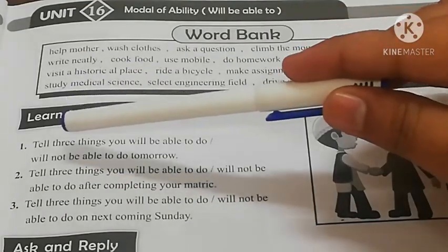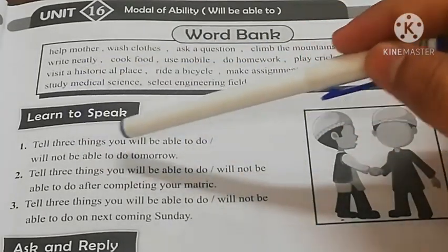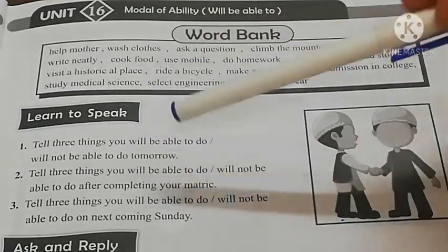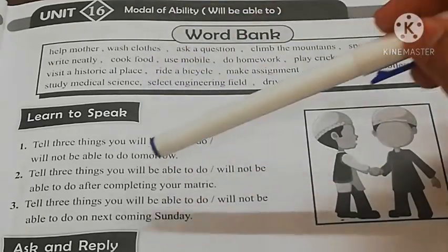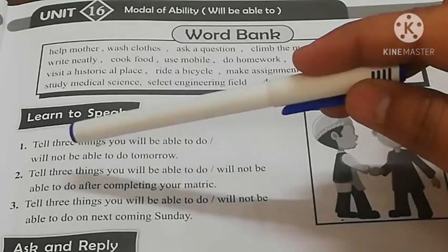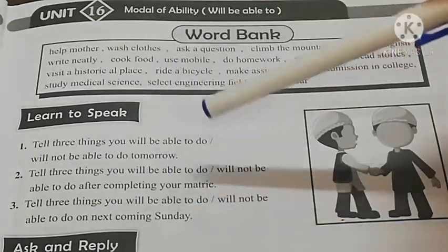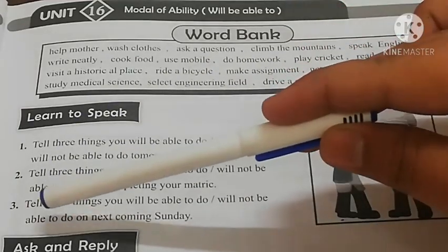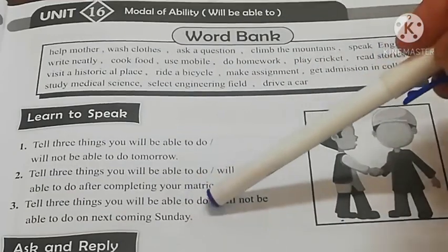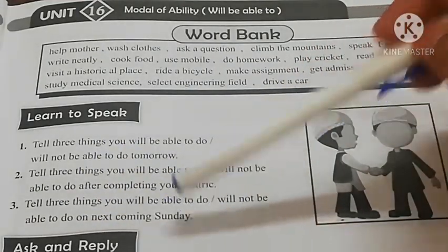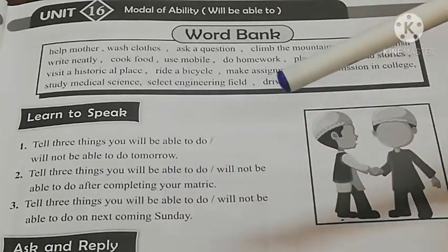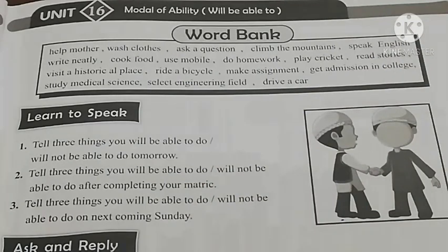In the first task, you tell three things that you will be able to do, or will not be able to do, tomorrow — using the 'I will be able to' or 'will not be able to' structure. You have the Word Bank available; memorize those phrases, practice them, and then when you conduct the 'Learn to Speak' task, you will not face any difficulty.